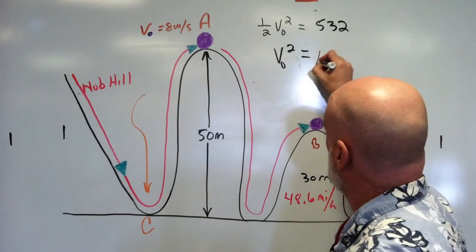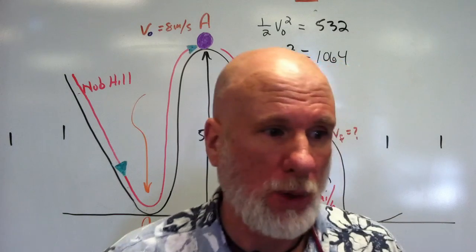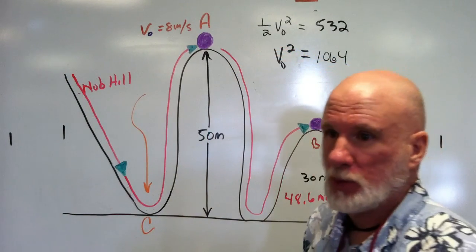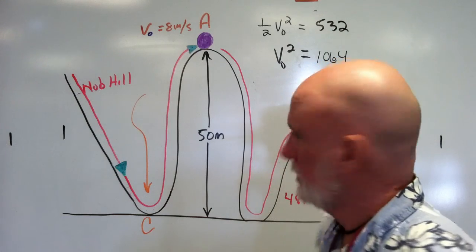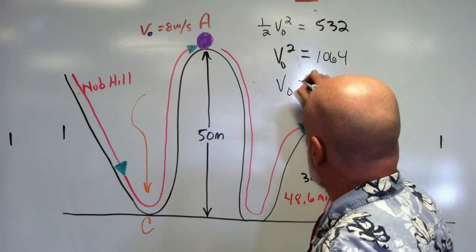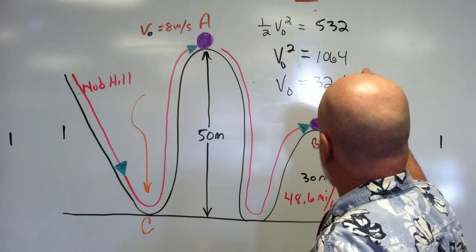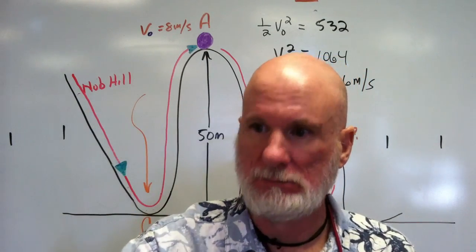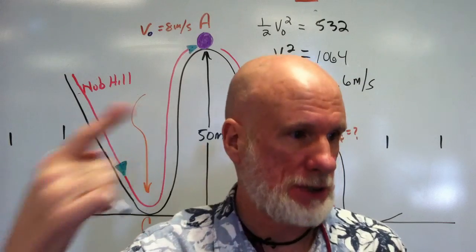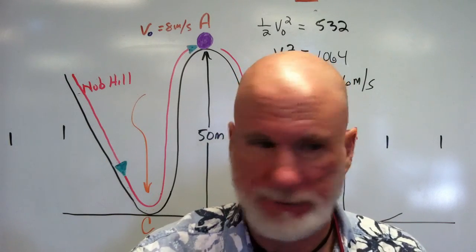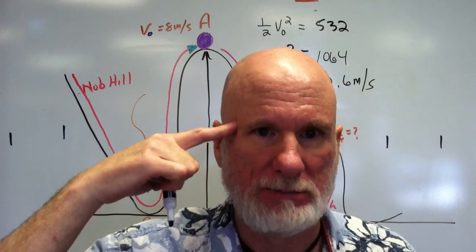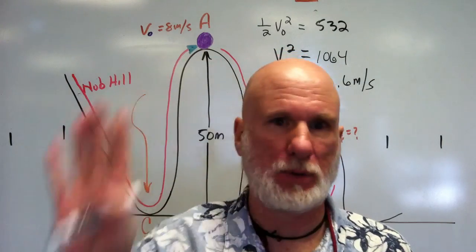So this will be 1,064. What's the square root of 1,064? 32.6 meters per second. Is that okay? Now 32.6 times 3,600 divided by 1,600. We're in America, they don't understand metric. Very weird.